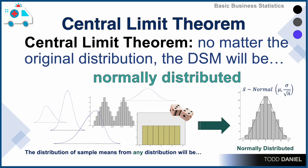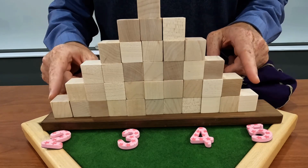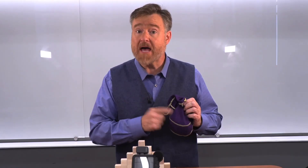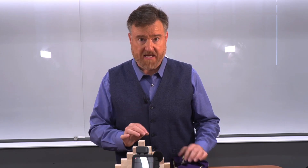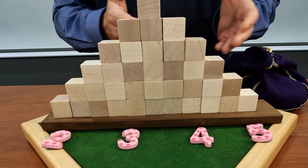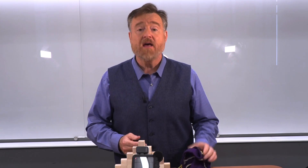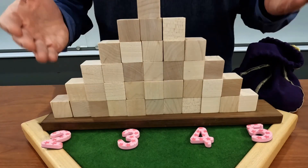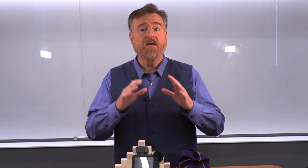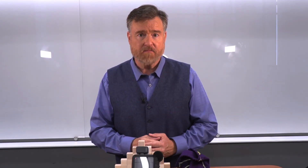The Central Limit Theorem establishes that no matter the shape of the underlying population distribution, the distribution of sample means from that population will always be normally distributed. If our population is bimodal, the distribution of sample means will be normal. If our population is skewed, the distribution of sample means will be normal. If our population is uniform, the distribution of sample means will be normal — for any underlying population.